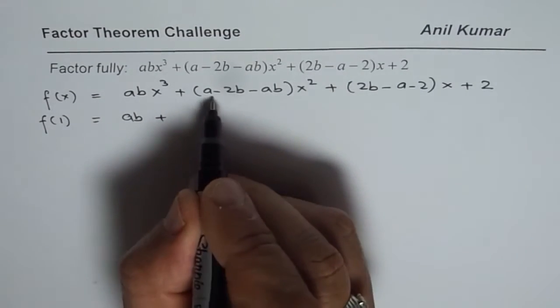We can now write f(x) = (x − 1)(abx² + (a − 2b)x − 2). That is the factored form after long division, where abx² + (a − 2b)x − 2 is our quotient.